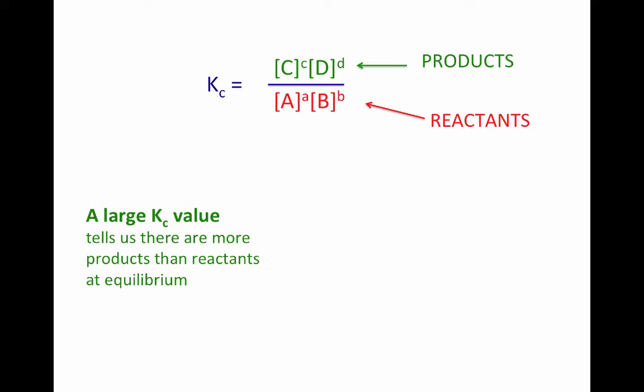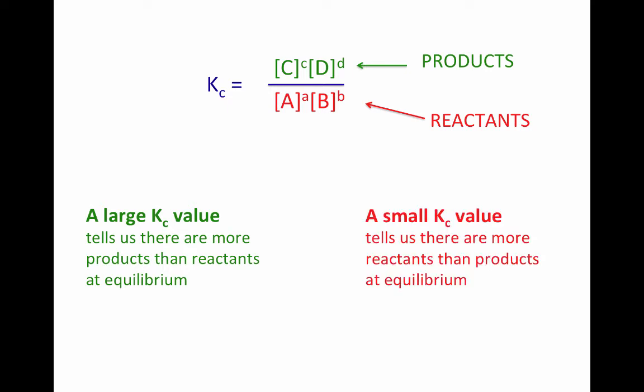If you have more reactants than products, then you will have a large number in the denominator of your fraction because you have large concentrations of reactants, and you will have small numbers in the concentrations of your products in the numerator. So you're going to have a small number divided by a large number, which overall gives us a small number for our equilibrium constant. So a small Kc value lets us know that we're going to have more reactants than products at equilibrium.